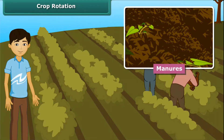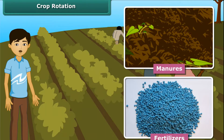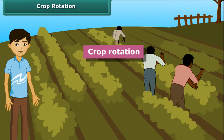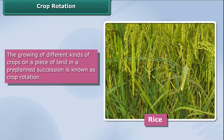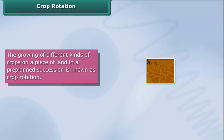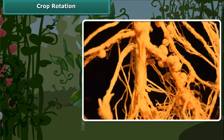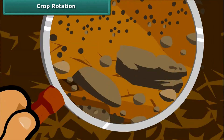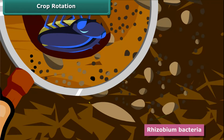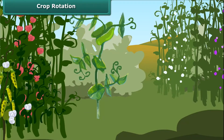Another method of replenishing the soil with nutrients is crop rotation. When a cereal crop like rice is grown in the soil, it uses up a lot of nitrogenous salts, and if another cereal crop is grown in the same soil, the soil becomes nitrogen deficient. So by rotation, a leguminous crop should be grown after a cereal crop. Some bacteria present in the root nodules of leguminous plants — known as rhizobium bacteria — fix atmospheric nitrogen to form nitrogen compounds. When these nitrogen compounds go into the soil, it becomes more fertile, and when a cereal is subsequently grown, food grain production increases.